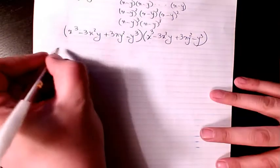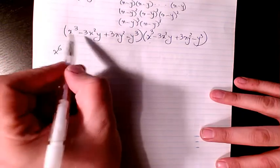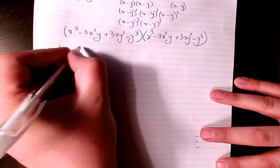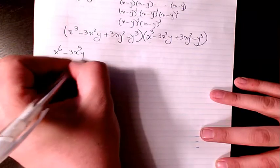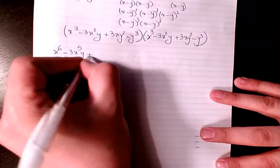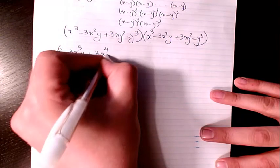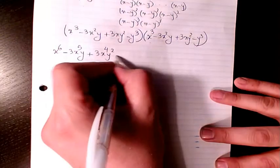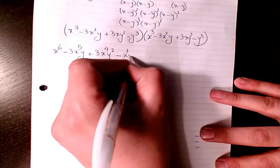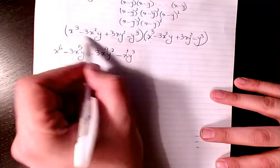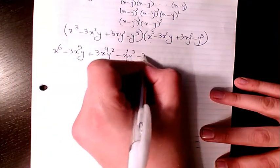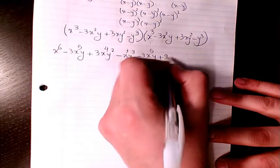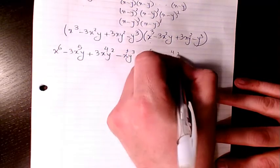x cubed times x cubed gives x to the power of 6. x cubed times negative 3x squared gives negative 3x to the power of 5y. Then we have 3x to the power of 4y squared when we multiply these two. And then we have x cubed y cubed. Then this one times this will be negative 3x to the power of 5y, plus 9x to the power of 4y squared when we multiply these two.